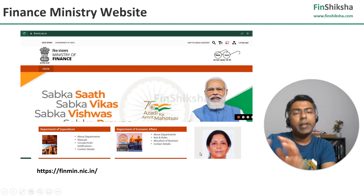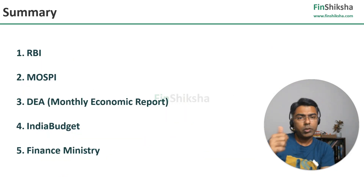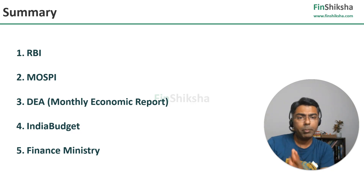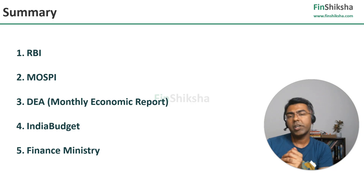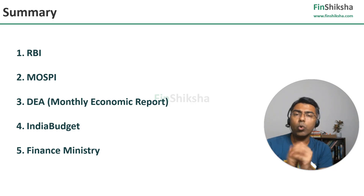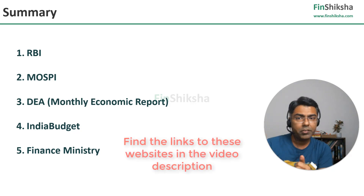So that, in a nutshell, are the top five sources. To summarize: the first is the RBI website, which is the Central Bank website. Second is MOSPI — Ministry of Statistics and Programme Implementation. Third, the Department of Economic Affairs comes up with a monthly economic report. Fourth, indiabudget.gov.in where you get all union budget-related documents. And fifth, the Finance Ministry website, which is your core website with all this information. The links to all these websites have been put in the description, so do go and check it out.